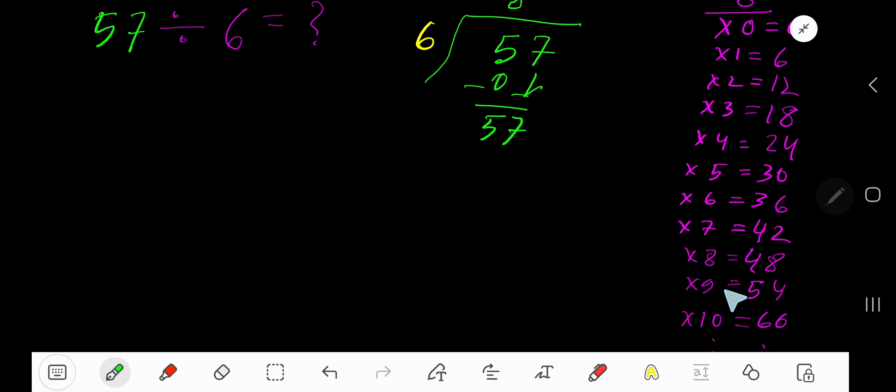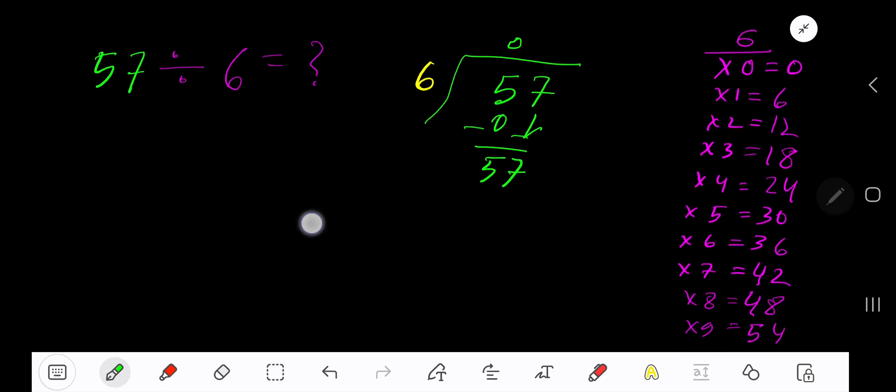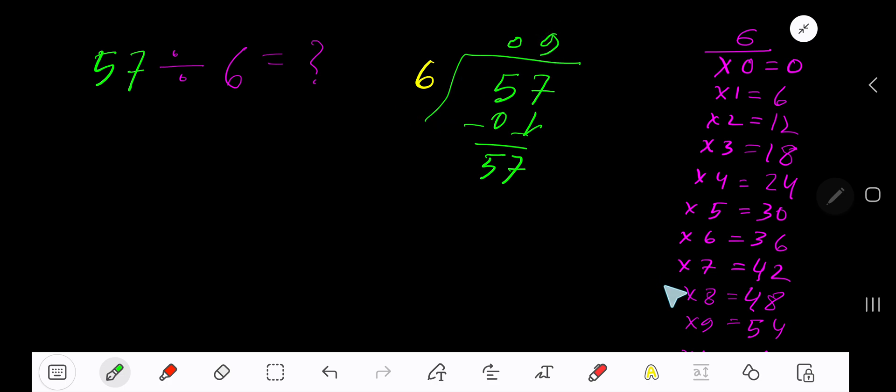So 9 times. 9 times 6 is 54. Subtract, you're getting 3. So our answer is 09, which means 9 remainder 3. If you want to write your answer in decimal form,